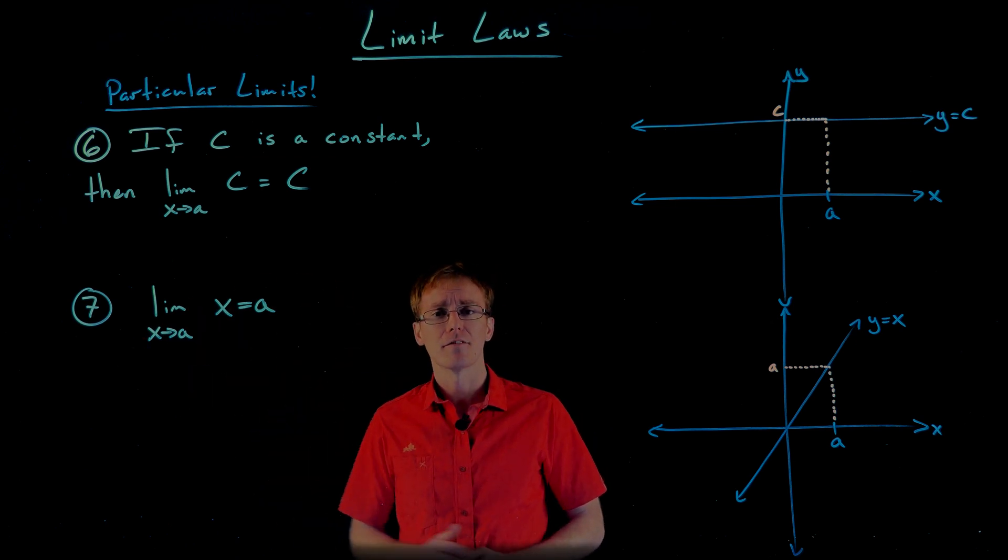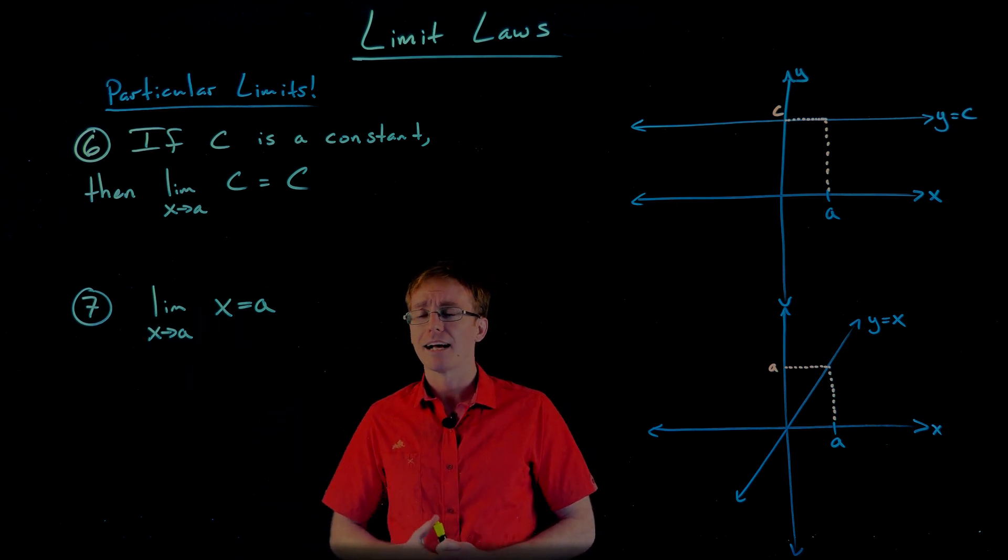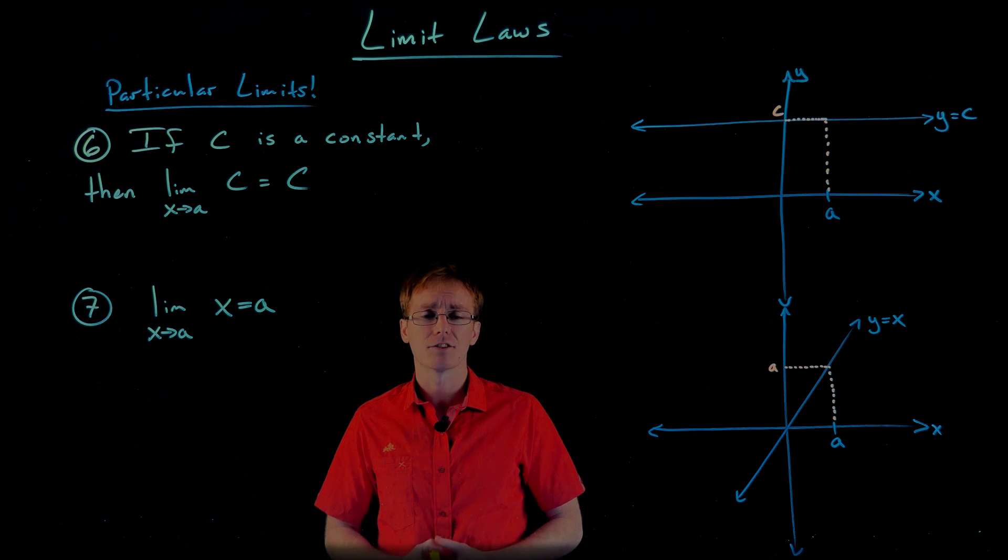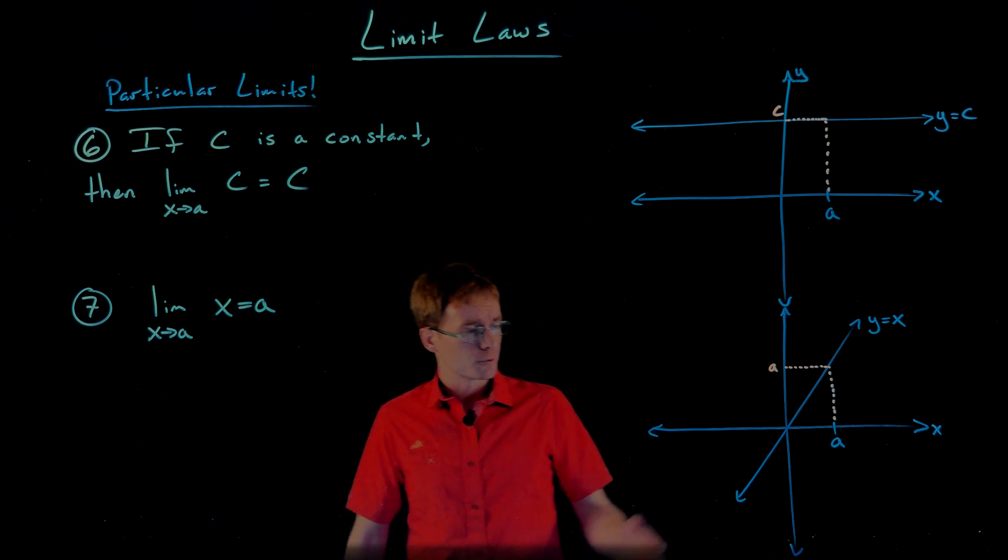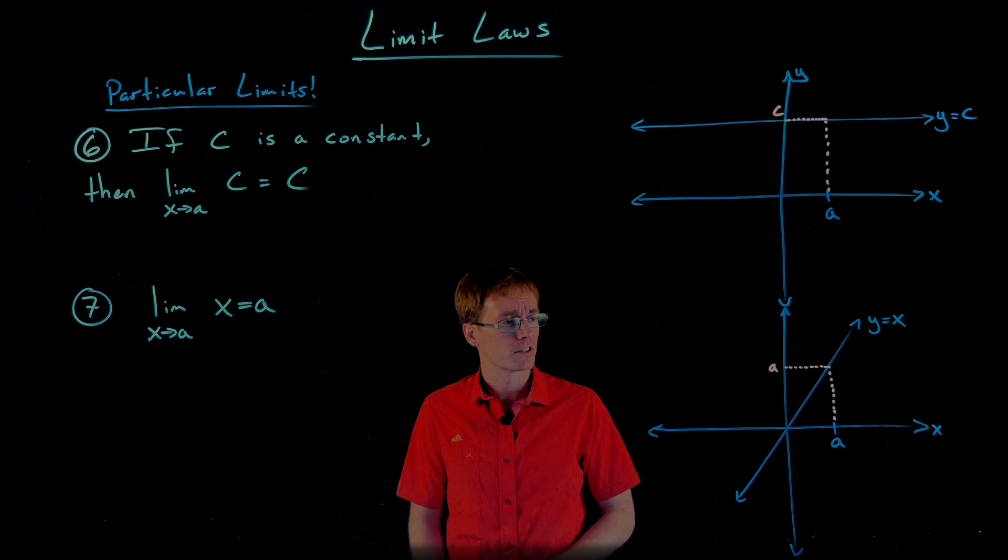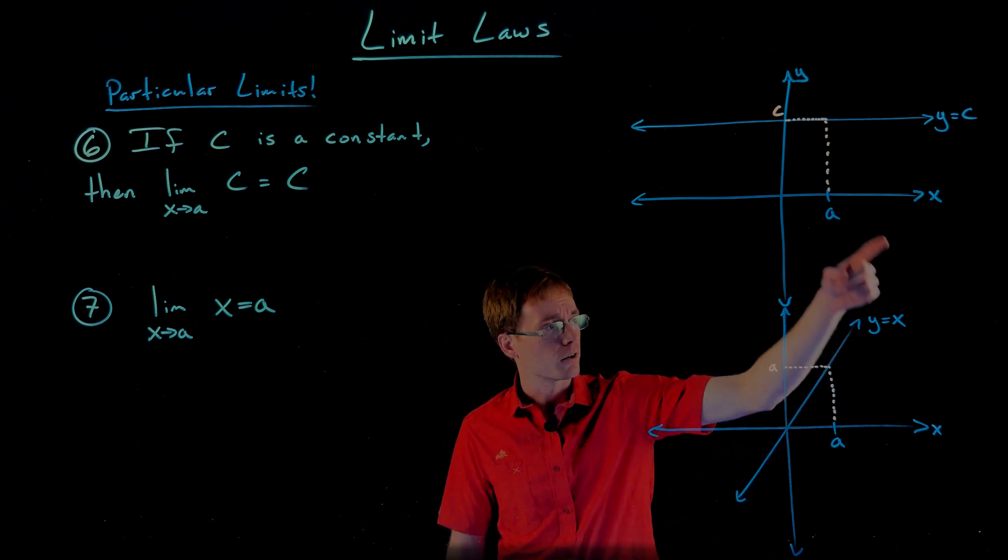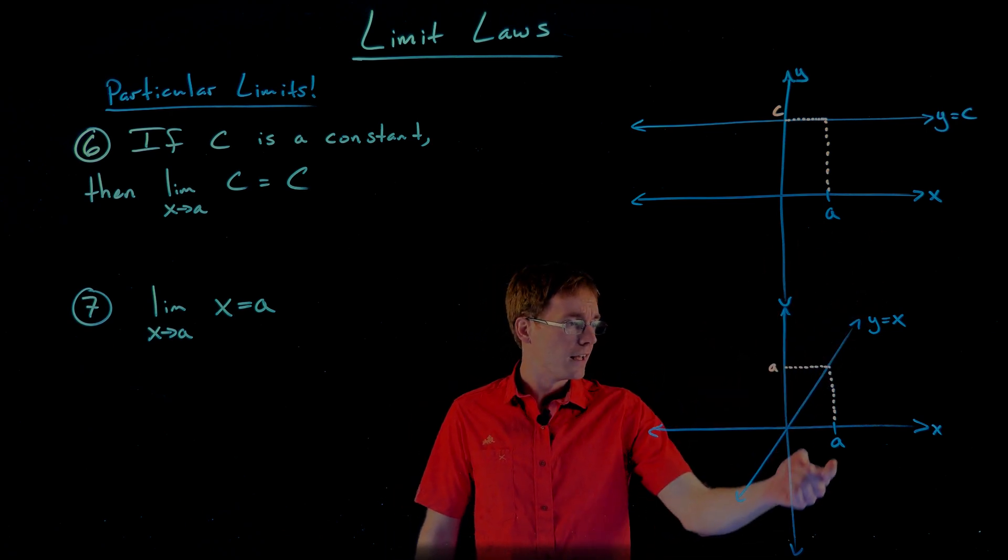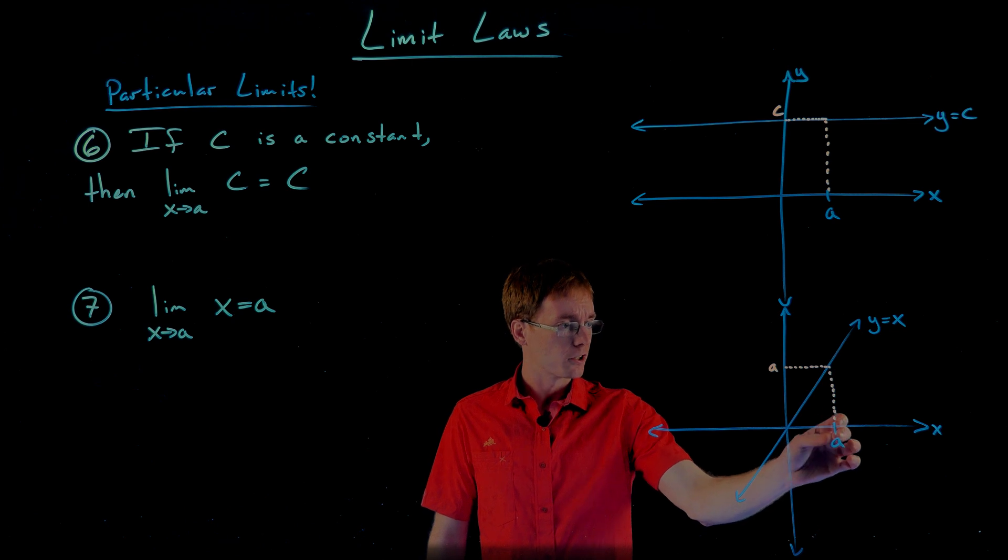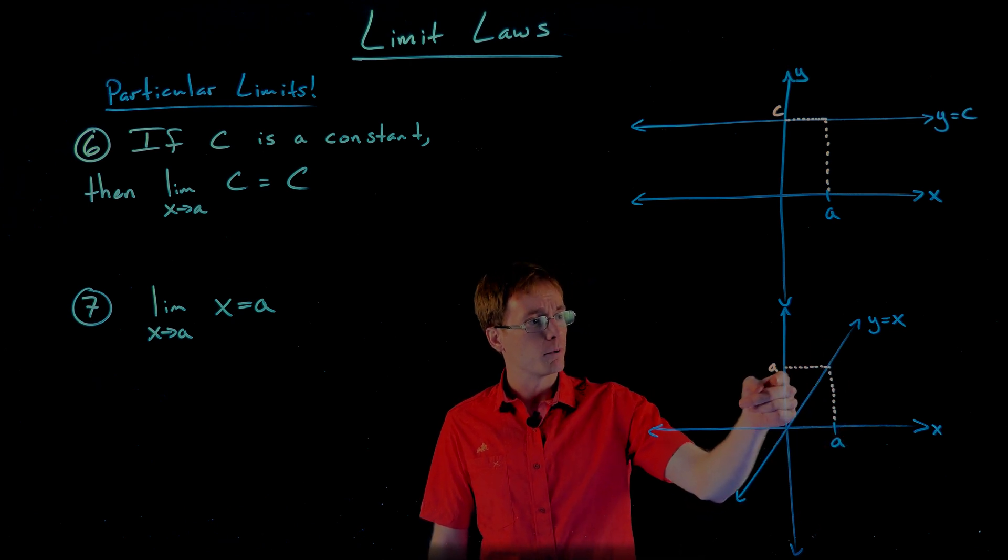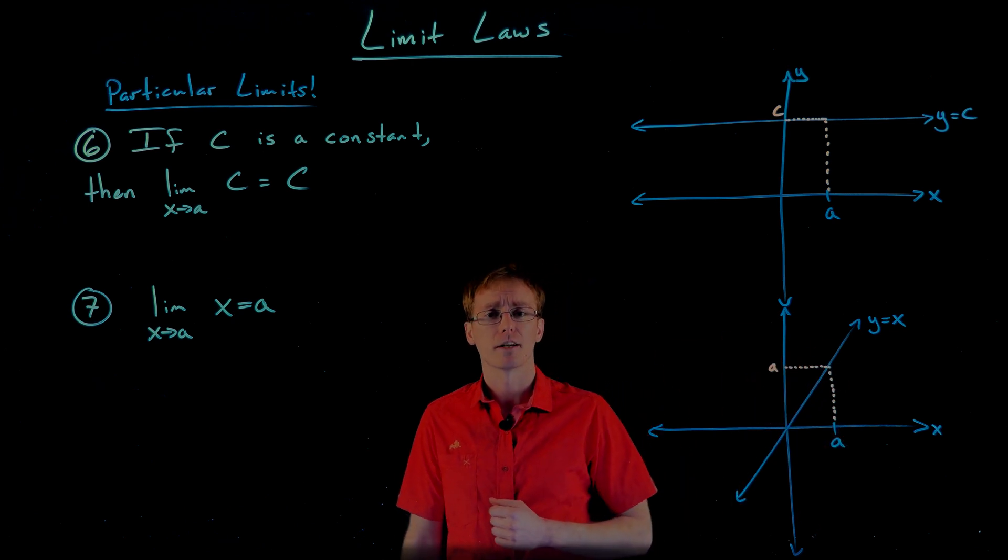What I'm calling limit law number seven just says the limit as x approaches a of x is equal to a. So we can approach that graphically in the same way we did our constant function. Over here I graphed our line y equals x, and what happens as x gets closer and closer to a? Well, the output, we can see, also gets closer and closer to a.